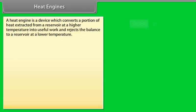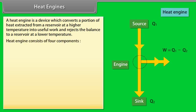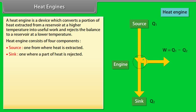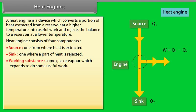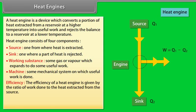Heat engines. A heat engine is a device which converts a portion of heat extracted from a reservoir at high temperature into useful work and rejects the balance to a reservoir at lower temperature. A heat engine consists of four components: source (from where heat is extracted), sink (where part of heat is rejected), working substance (gas or vapor which expands to do useful work), and machine (mechanical system on which useful work is done). Efficiency of a heat engine = 1 − Q₂/Q₁.